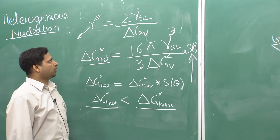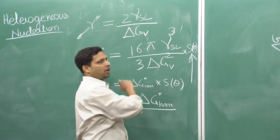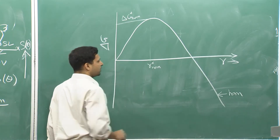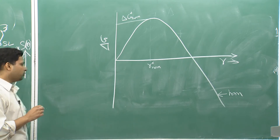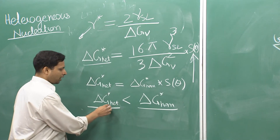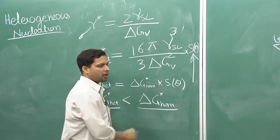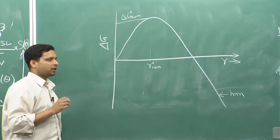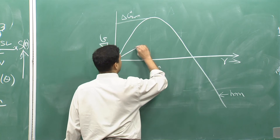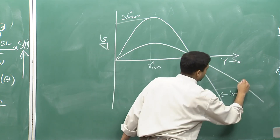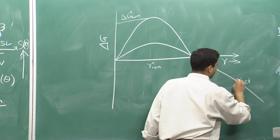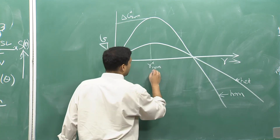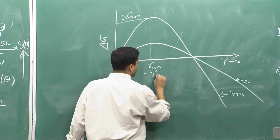R*_heterogeneous is the same as R*_homogeneous, and ΔG*_heterogeneous is a much smaller value — it becomes ΔG*_homogeneous × S(θ). Let us look at specific values of θ and the corresponding value of S(θ).